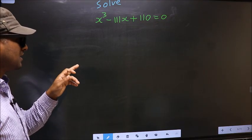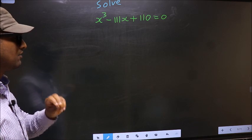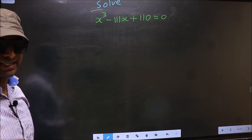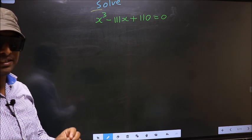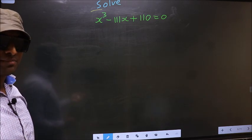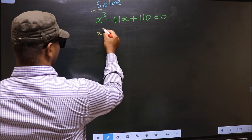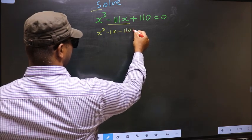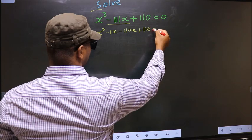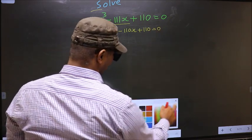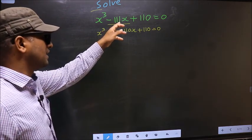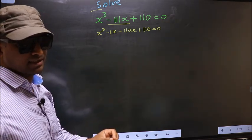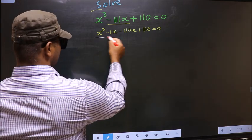Solve x³ - 111x + 110 = 0. Here they told us to solve, which means we should get the values of x. For that, we should change the x term — in place of minus 111x, I write minus 1x minus 110x, so the equation becomes x³ - x - 110x + 110 = 0.